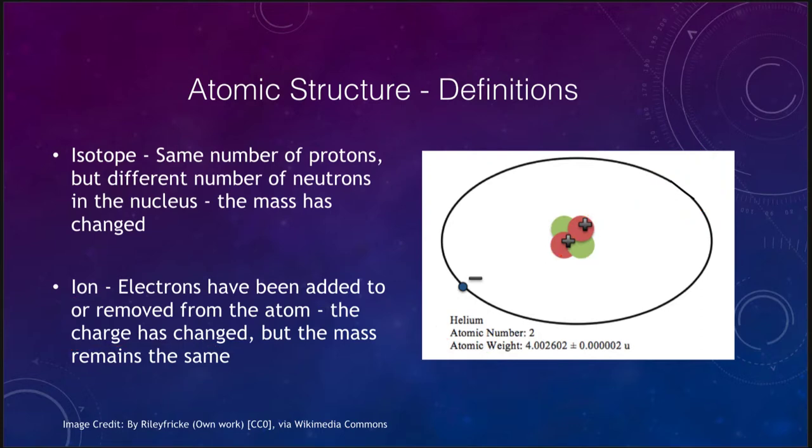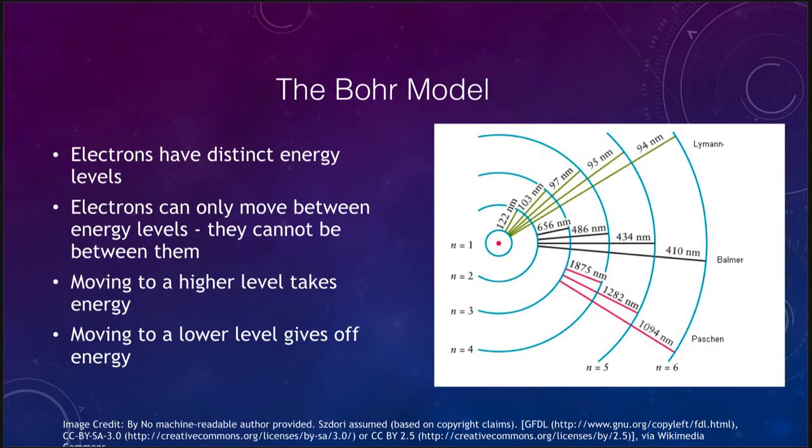Now let's look at a model of the atom here. This is called the Bohr model, named after the scientist who came up with this. The Bohr model is based on the electrons having very specific energy levels. So there are distinct energy levels where they are allowed.